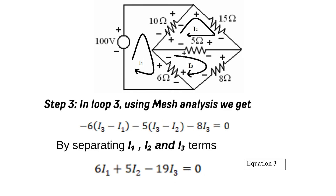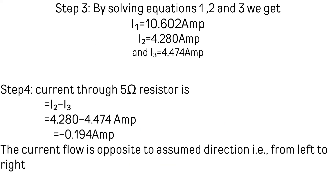Step 3 — In loop 3, using mesh analysis: −6(I3 − I1) − 5(I3 − I2) − 8·I3 = 0. Separating terms gives: 6·I1 + 5·I2 − 19·I3 = 0. This is Equation 3. By solving equations 1, 2, and 3, we get I1 = 10.602 A, I2 = 4.280 A, and I3 = 4.474 A.